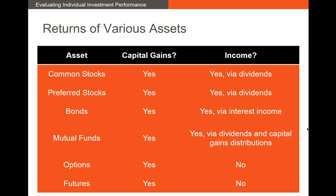So what kind of returns can we expect from various asset classes? For common stocks — public or private — we can expect capital gains and dividends. For preferred stocks, we can also expect capital gains if the value has gone up over time, plus regular dividends. With bonds, there can be capital gains if investors have bid up the price, and we also get interest income assuming it's not a zero coupon bond.